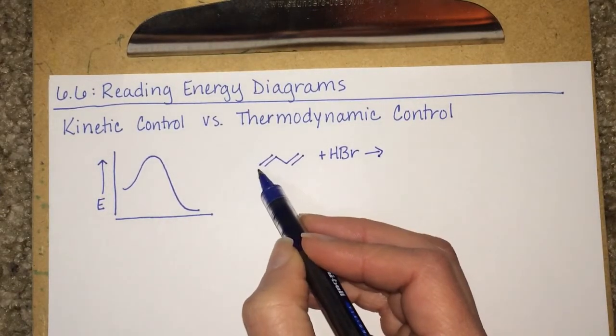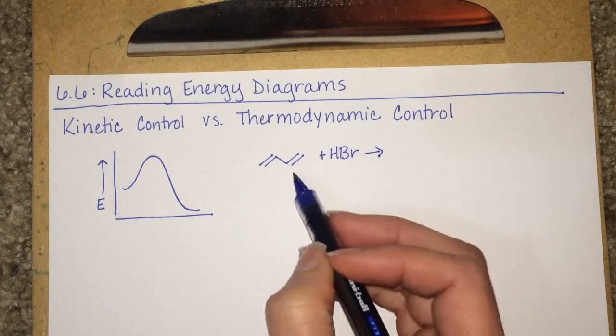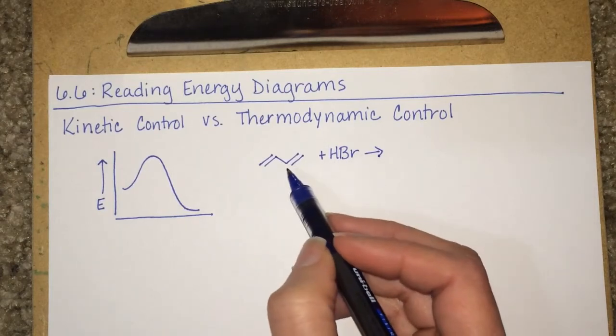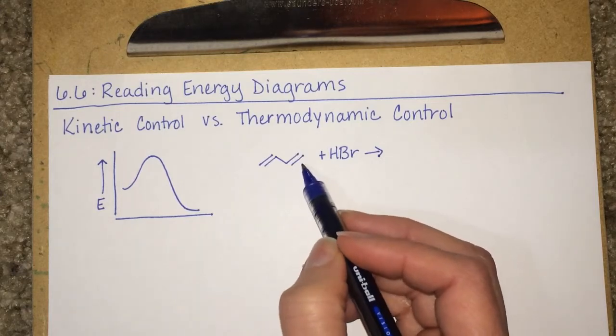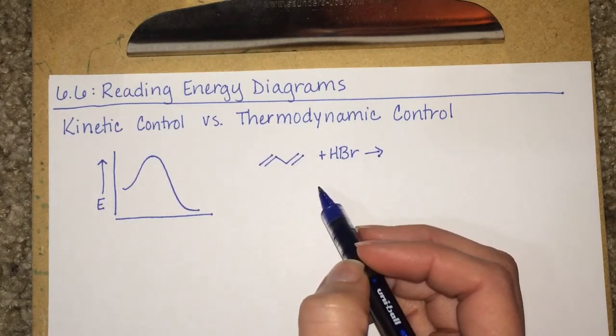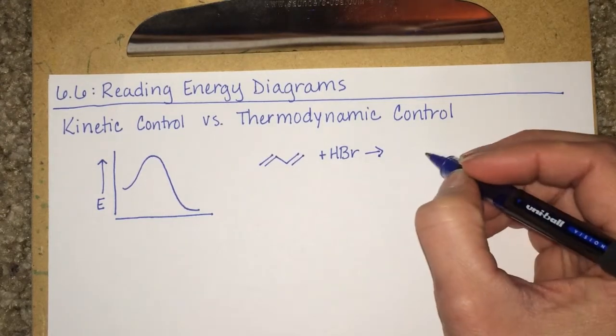when you have a couple of reactants, for example, this molecule which is called 1,3-butadiene and HBr, when you have these two reactants and bring them together, there's actually a couple of different things that they could do together. They're not always, 100% of the time, going to react to produce the exact same product every single time.